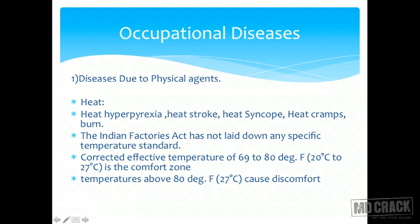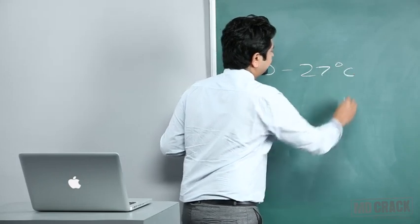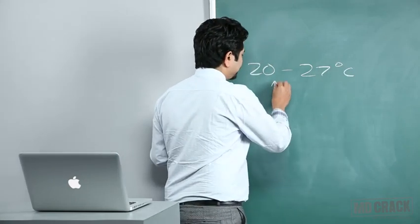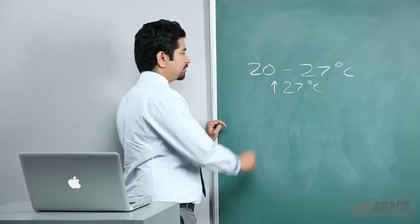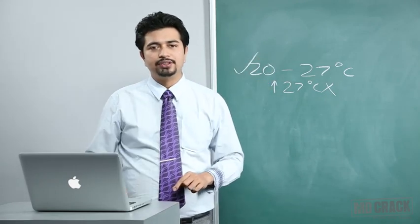The first physical agent is heat. Heat causes heat hyperpyrexia, heat stroke, heat syncope, heat cramps, and obviously burns. The Indian Factories Act has not laid down any criteria for temperature, so you cannot complain if your employer has not put on an AC. However, Indian research shows that 20 to 27 degrees centigrade is the comfort zone, and above 27 degrees centigrade it gets uncomfortable.